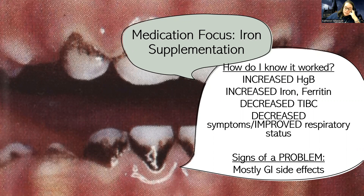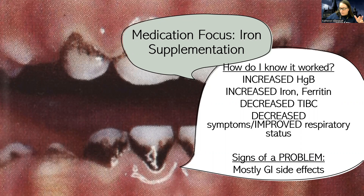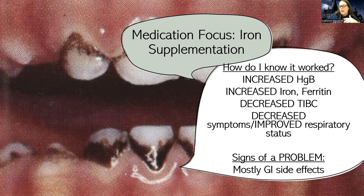As the nurse, one of the medications I'm going to give is iron supplementation. How do I know it worked? I'm going to look at iron labs — iron will go up, ferritin will go up, and TIBC will decrease because more iron is taking up those parking spaces. Their breathing may be better, but overall I'll check that hemoglobin, which should be increased. Signs of a problem with iron supplementation are mostly GI side effects — it's not always well tolerated. It's preferred to be given orally, but many patients experience nausea and vomiting.